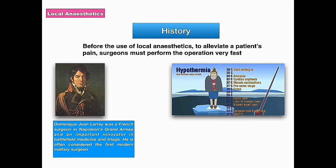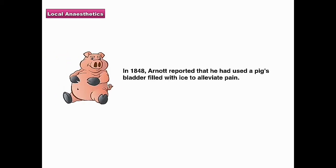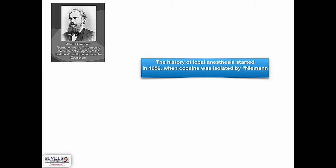Starting with the history of local anaesthetics. Before the use of local anaesthetics to alleviate a patient's pain, surgeons had to perform surgeries very fast. Later, Jean Larry, the French surgeon who served in Napoleon's army, was considered the modern-day military surgeon who used a technique called hypothermia — dissipation of body heat using ice — to alleviate pain. In 1848, Arnott reported using a pig's bladder filled with ice to alleviate pain.